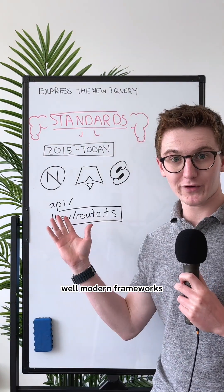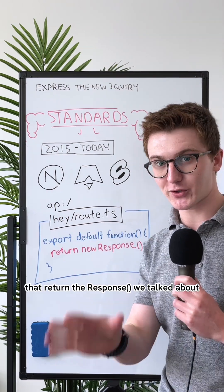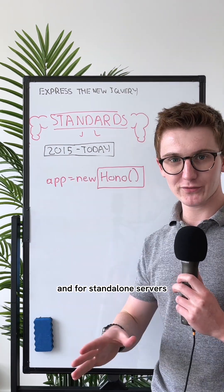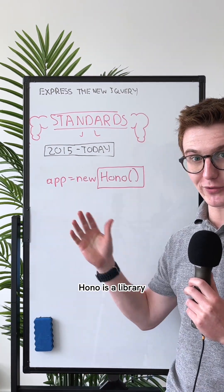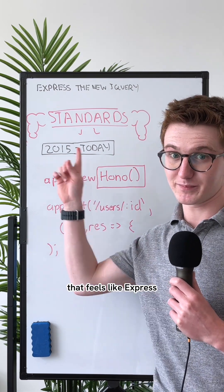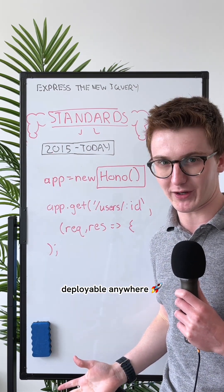What about routing? Well, modern frameworks give you file-based routing that returns those same response objects. But for standalone servers, HONO is a library that feels like Express, is built on those standards, and is deployable anywhere.